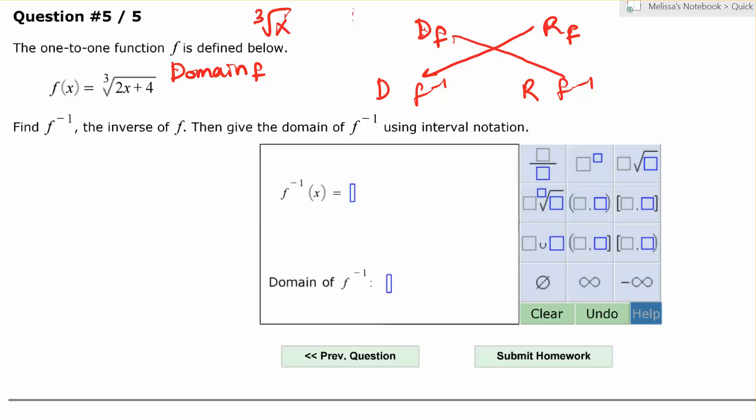The cube root of x is a graph where, if I plug in perfect cubes, I could plug in negative 8, and the cube root of negative 8 is negative 2. The cube root of negative 1 is negative 1, 0 is 0, 1 is 1, 8 is 2. So we get this sideways kind of curve through the origin.